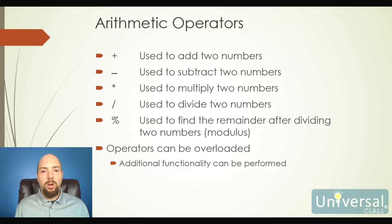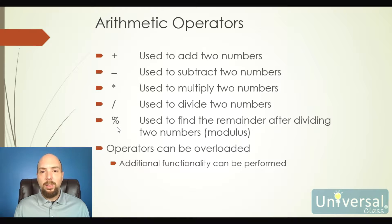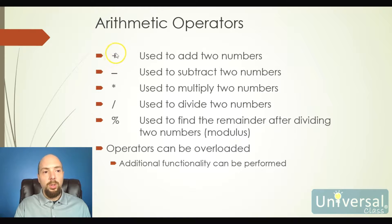We can also do arithmetic on our values. We can take two numbers and add them together or subtract two numbers. Addition is a plus sign, subtraction is a minus sign, the asterisk is for multiplication, the forward slash is to divide two numbers, and then the percent sign is used for modulus. The modulus is the remainder when you divide two numbers — for example, 10 modulus 3 equals 1. We can also overload some of these operators to give them additional functionality, which we'll cover in future lessons.